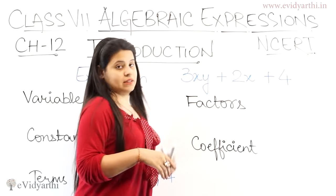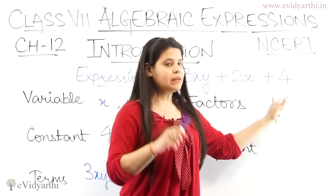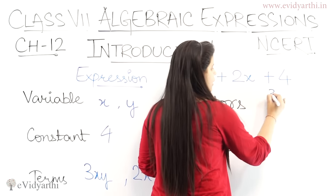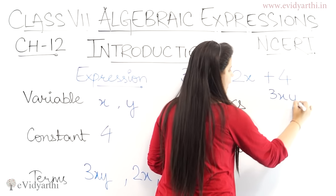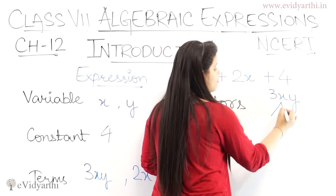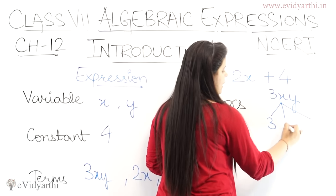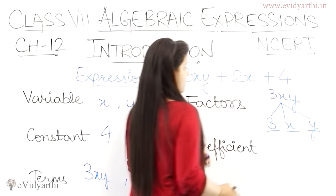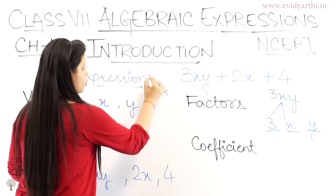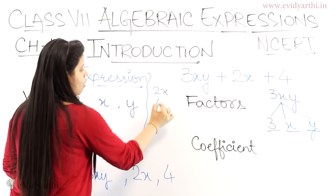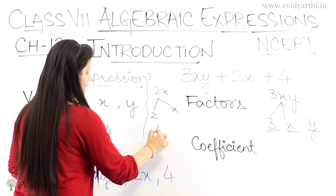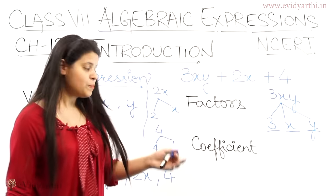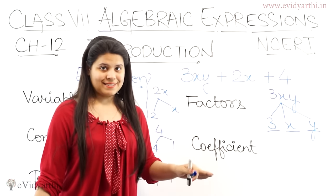Uske baad hai factors. Factors kya hota hai? Ismein poori expression mat lo, sirf term lo. Jaise ki agar term hai 3xy, to is 3xy mein alag-alag factors hai: 3 hai, x hai, y hai. So 3 is a factor, x is a factor, y is a factor. Agar aap 2x le rahe ho, to 2 aur x dono factors hai. Agar aap 4 le rahe ho, to 4 — ya aap 1 bhi keh sakte ho because 4 into 1 is 4. So yeh iske factors hain.